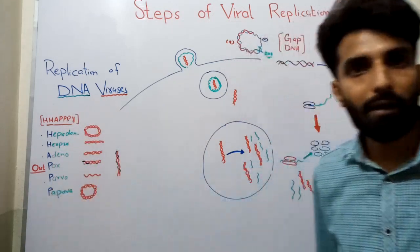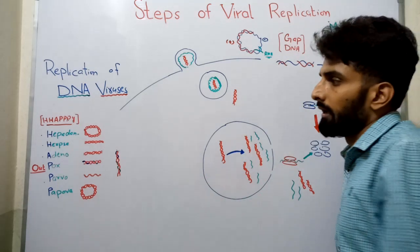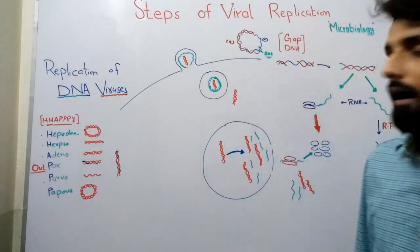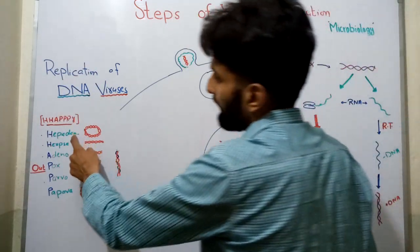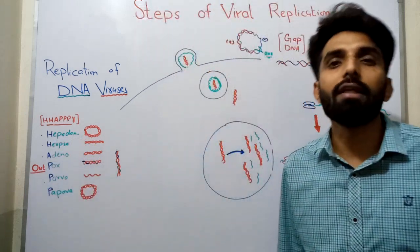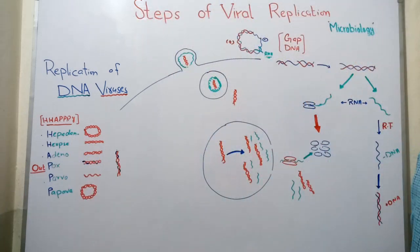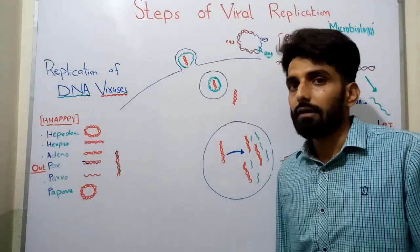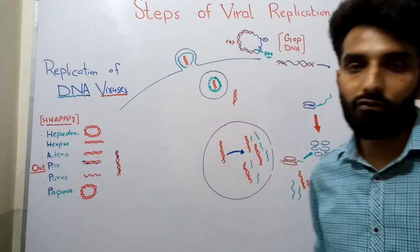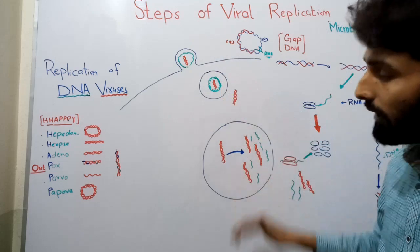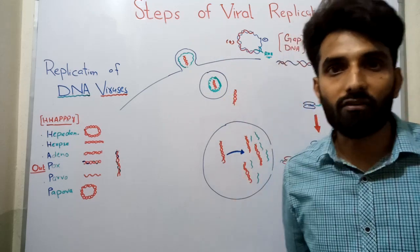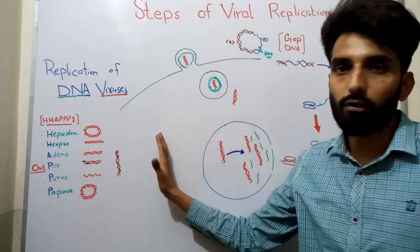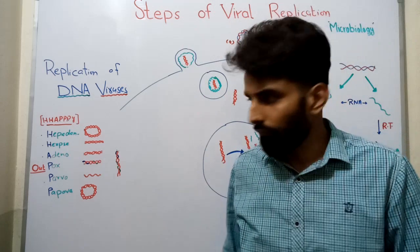All these viruses are basically double-stranded DNA viruses, except Parvo virus, which is a single-stranded DNA virus. All these viruses have linear DNA except HepaDNA virus and Papova virus, which have circular DNA. Also, all these viruses need to enter the nucleus of the host cell for replication, except the Pox virus, which can replicate outside the nucleus in the cytoplasm.